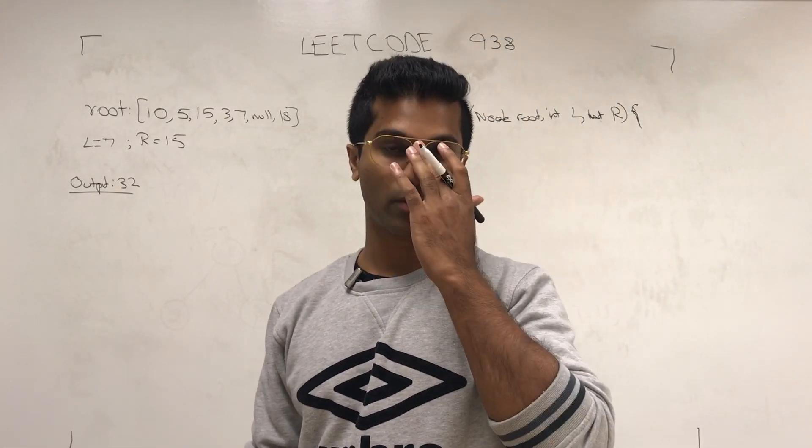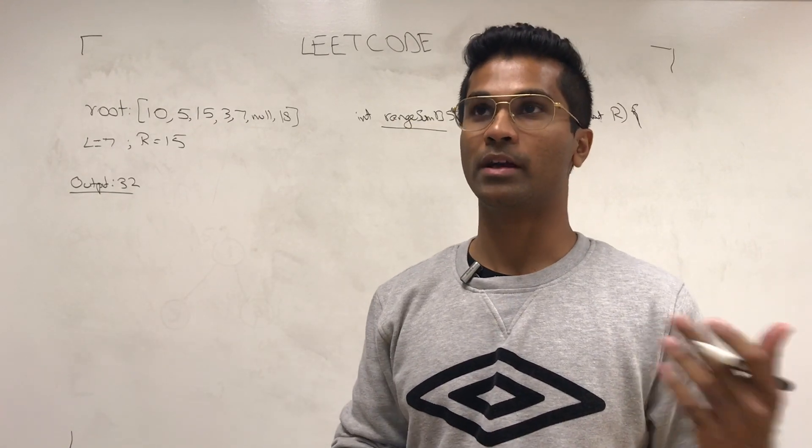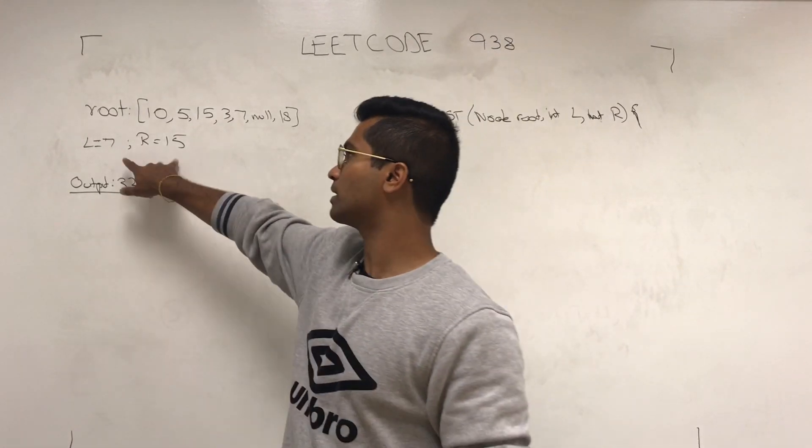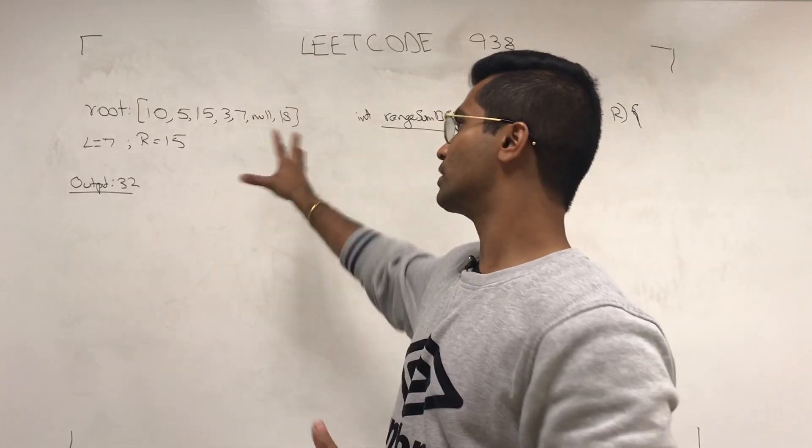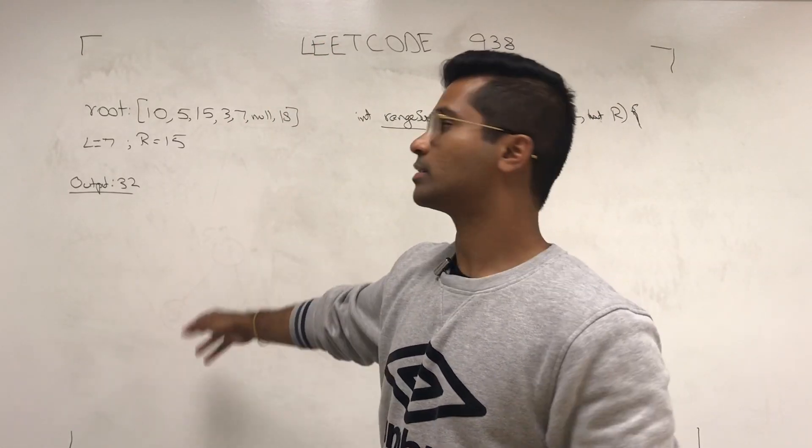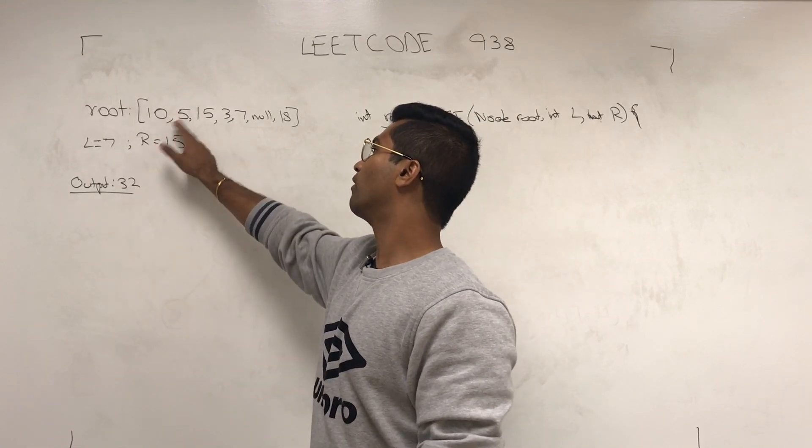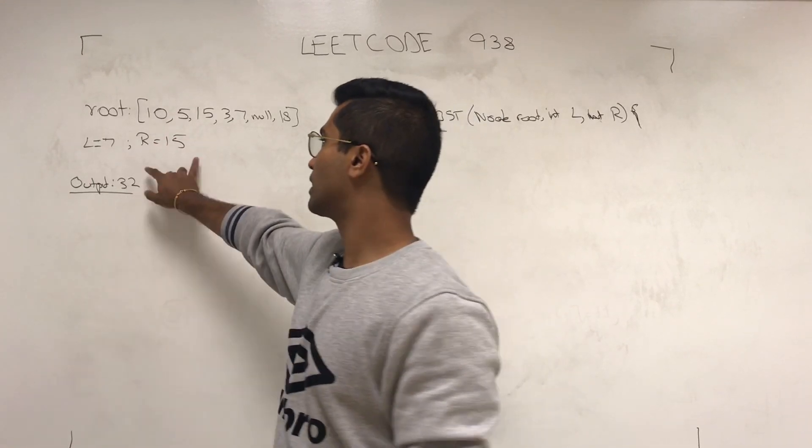This is very similar to a problem I made a video on before called trim binary search tree, where they pass in two limits just like here. Unfortunately they don't give us an actual tree to visualize it, but all they want is to find out what's going to be the total sum of all the node values that's in that range.